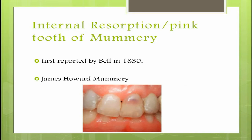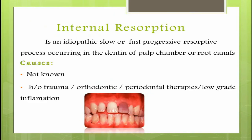Next is internal resorption. It was first reported by Bell in 1830. It is also called the pink tooth of Mummery, because of the presence of pink discoloration seen through the crown of the tooth, and is named after the anatomist James Howard Mummery. It is an idiopathic, slow or fast progressive resorptive process occurring in the dentine of the pulp chamber or the root canals. The exact etiology is unknown but could be due to history of trauma, orthodontic or periodontal therapies, low-grade inflammation, and herpes zoster inflammation is also considered as one of the causes for internal resorption.